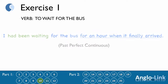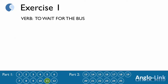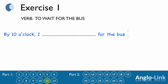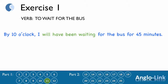Number 11: 'By 10 o'clock I ___ for the bus for 45 minutes.' Answer: 'By 10 o'clock I will have been waiting for the bus for 45 minutes.' Future perfect continuous.